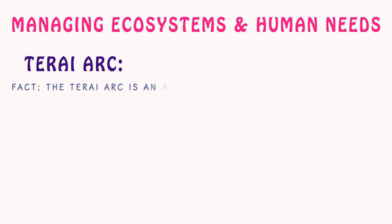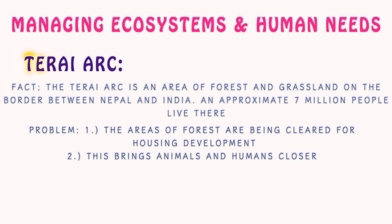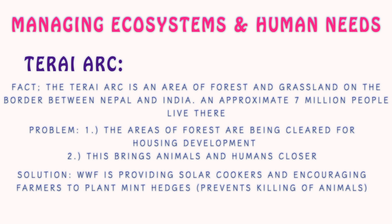The Terai Arc is an area of forest and grassland on the border between Nepal and India, where approximately seven million people live. The problems are twofold: areas of forest are being cleared for housing development, and this brings animals and humans closer together, which unfortunately leads to humans killing animals due to incompatibility. The WWF charity is providing solar cookers and encouraging farmers to plant mint hedges around their crops, which prevents the killing of trees and animals.